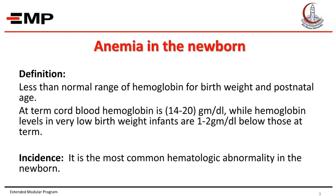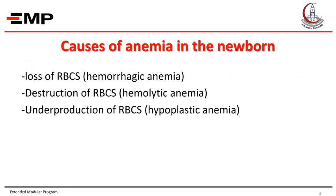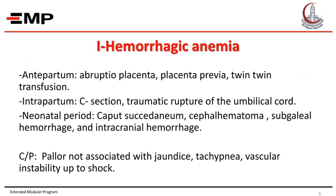Anemia in the newborn is defined by less than normal range of hemoglobin for birth weight and postnatal age. At term, cord blood hemoglobin is between 14 and 20 grams per deciliter, while hemoglobin levels in very low birth weight infants are 1 to 2 grams per deciliter below those at term. It is the most common hematologic abnormality in the newborn. Causes include hemorrhagic anemia (loss of red blood cells), hemolytic anemia (destruction of red blood cells), and hypoplastic anemia (underproduction of red blood cells).